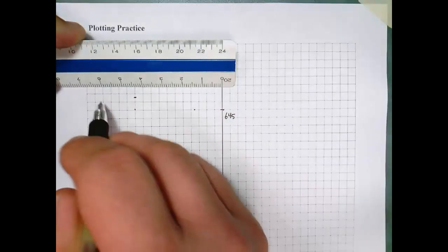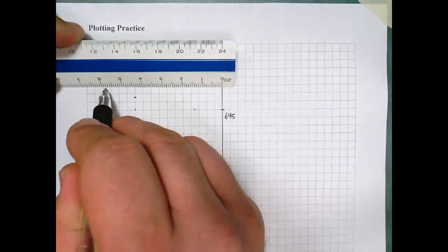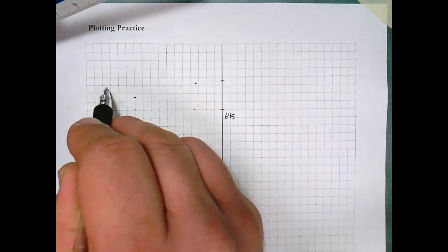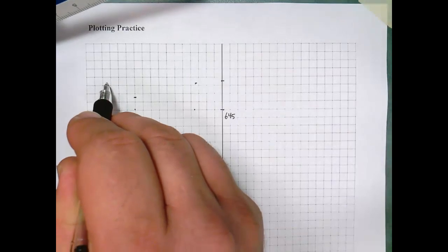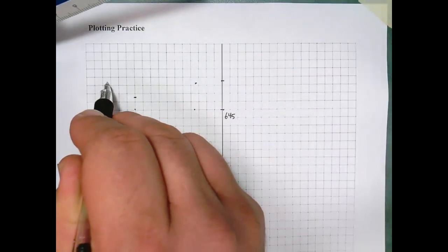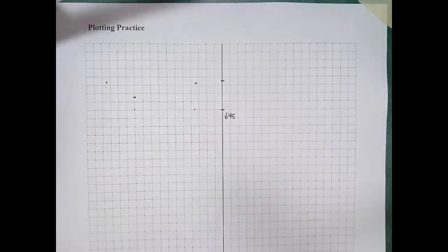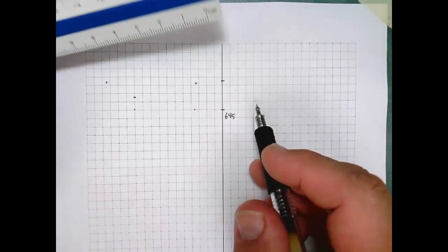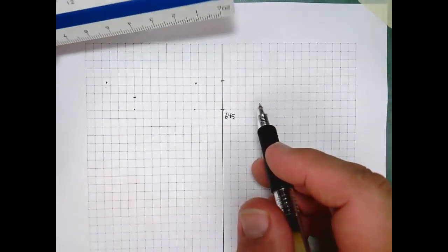Now I'm going to keep going further out. My last offset to the left is at 58 feet left, and I need to be at 651.8. So 651 is the line just below the dot, 651.8. I estimate that, and now you can see I've got my 3 points to the left of the center line plotted.